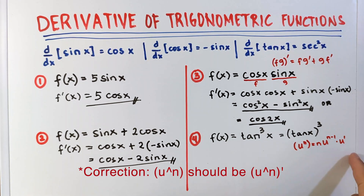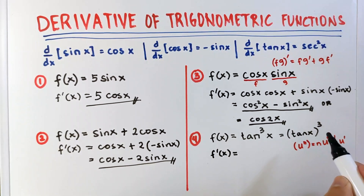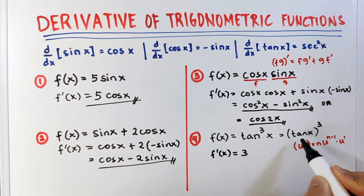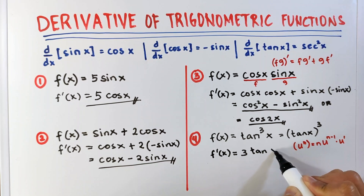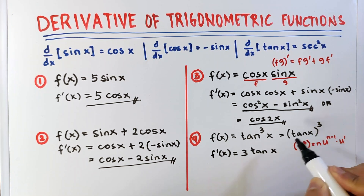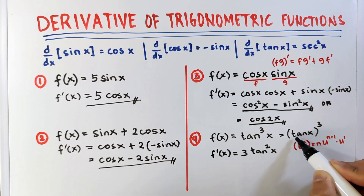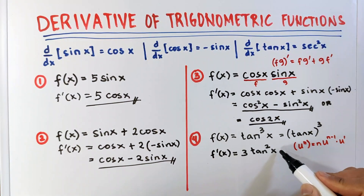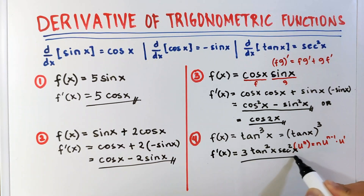So now let's follow that formula. f prime of x is equal to: bring down 3 as a coefficient, copy the base tangent x, subtract 1 from the exponent so that's 3 minus 1 equals 2, and then multiply it by the derivative of the base. The derivative of tangent x is secant squared x. So we multiply by secant squared x. This is our final answer.